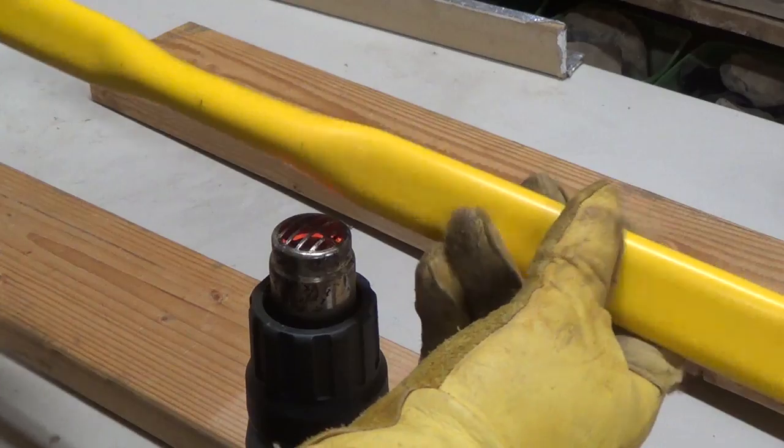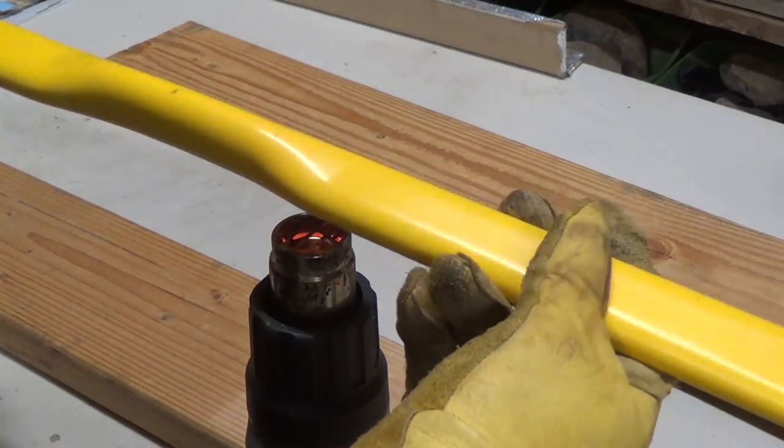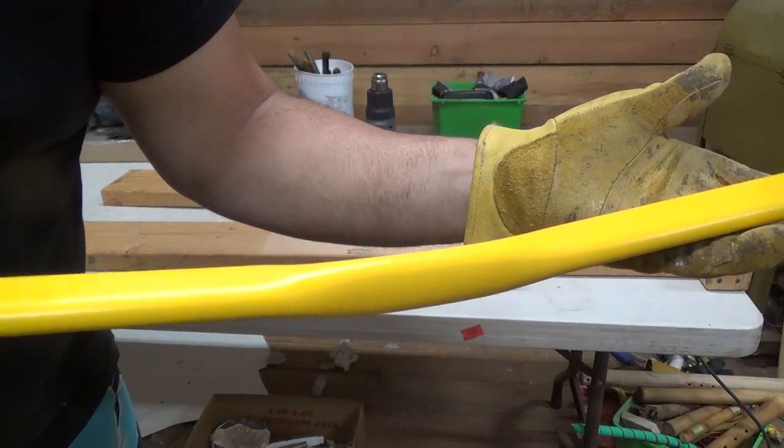I go back to the heat gun and gently heat up the fade outs so that I can give the bow just a little bit of reflex.